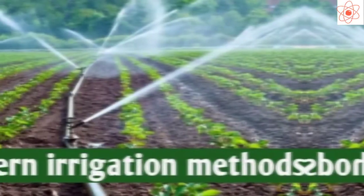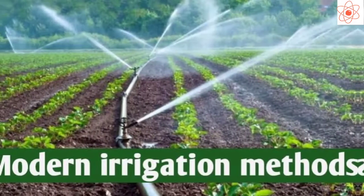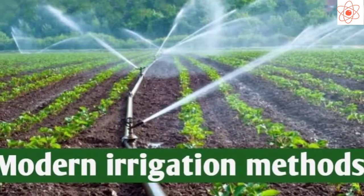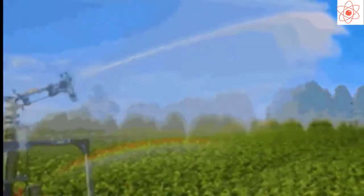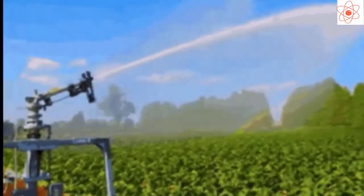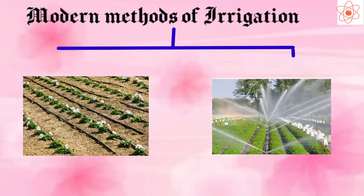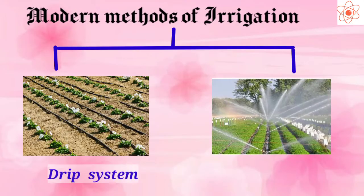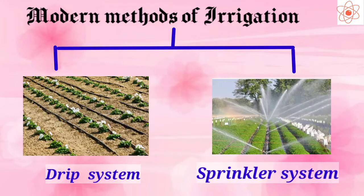Now, let us discuss modern methods of irrigation. The modern methods of irrigation help us to use water economically. There are two main methods: first, drip system, and second, sprinkler system.